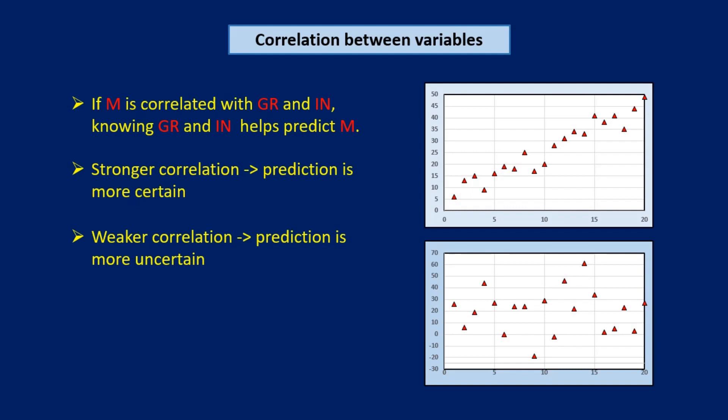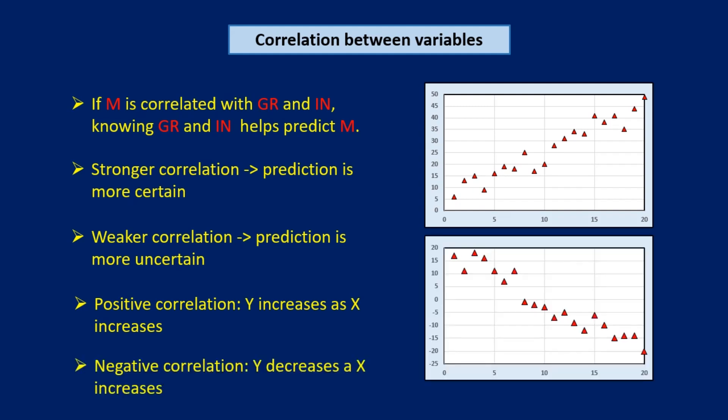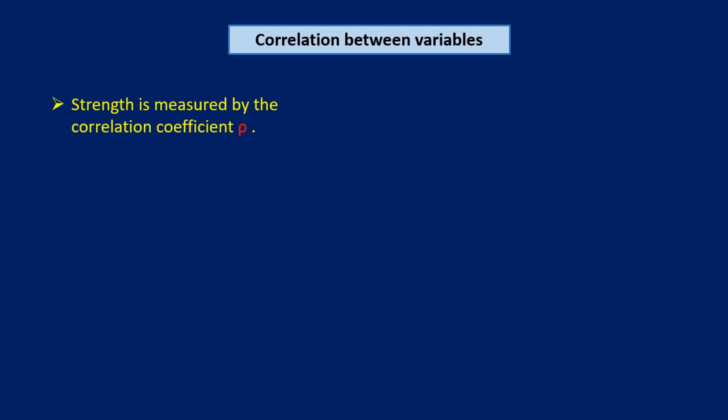Correlation can also be either positive or negative. Positive correlation means that the value of y increases as the value of x increases, and negative correlation means that the value of y decreases as the value of x increases. We measure the strength of correlation with a statistic called the coefficient of correlation, usually designated by the Greek letter rho, which is written like a lowercase p.